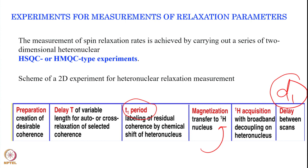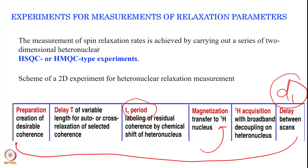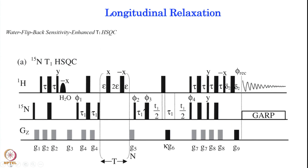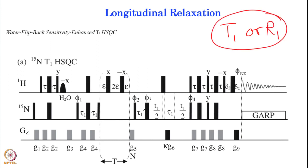After the T1 period we transfer the magnetization to proton for detection, acquiring on proton while decoupling the heteronucleus like 13C or N15. After acquisition there is a D1 delay period that ensures magnetization returns to the Z direction before the next scan. This preparation → T1 delay → frequency encoding → proton detection is the typical 2D experiment framework, here encoding the longitudinal relaxation rate.